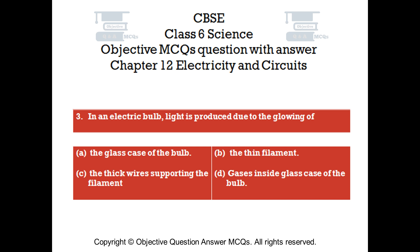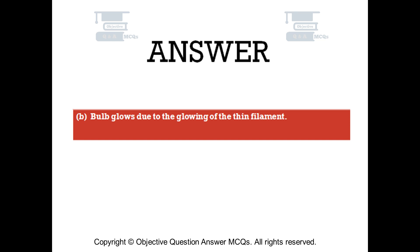Question number 3. In an electric bulb, light is produced due to the glowing of: Option A — the glass case of the bulb; Option B — the thin filament; Option C — the thick wires supporting the filament; Option D — gases inside the glass case of the bulb. The right answer is option B. The bulb glows due to the glowing of the thin filament.